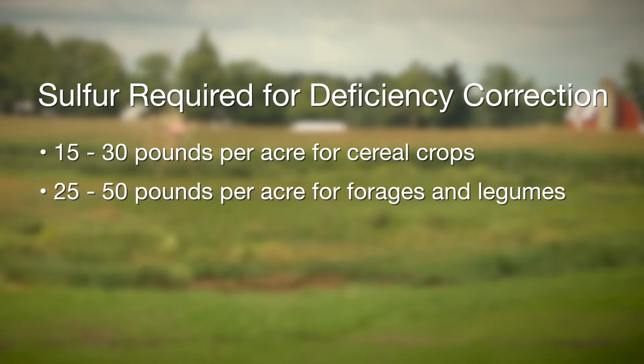When we're talking about forages or certain legumes, then we need more — many times 25 to 50 pounds per acre.